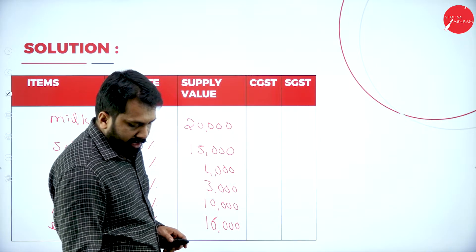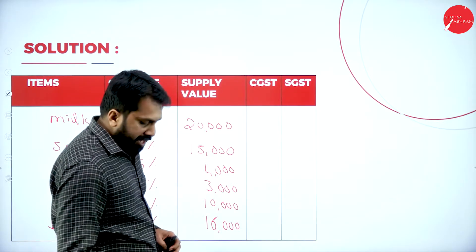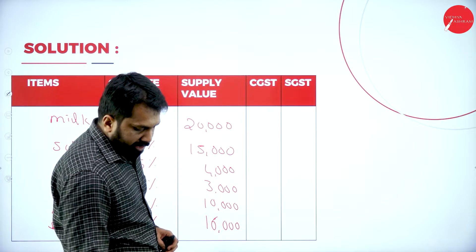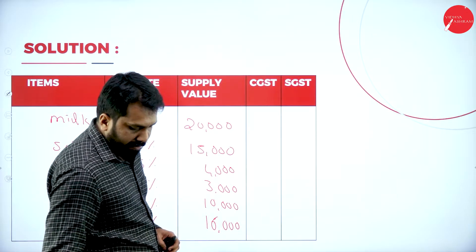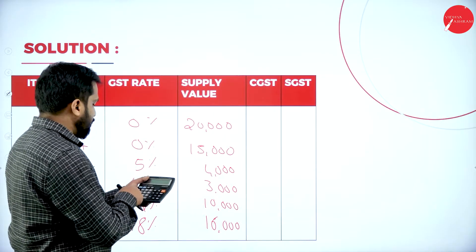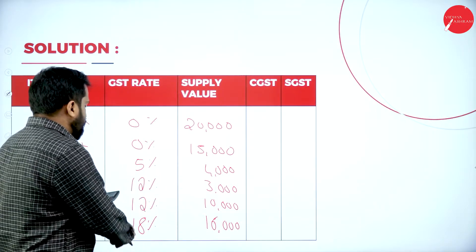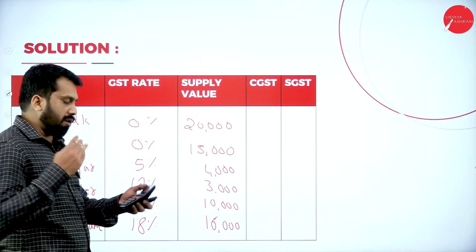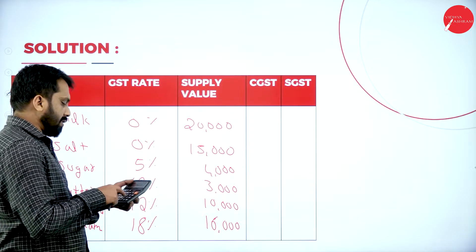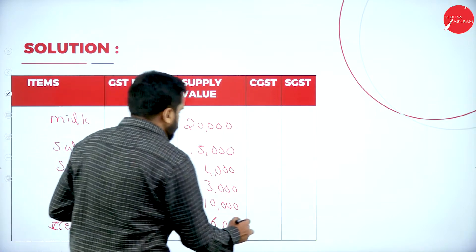I'll calculate ice cream first. The value is ₹16,000 into 18 percent. For CGST and SGST, we divide by two: 16,000 into 18 percent divided by 2 equals ₹1,440 each.